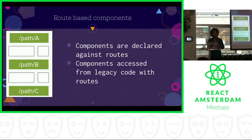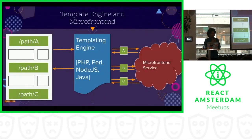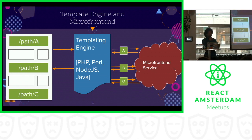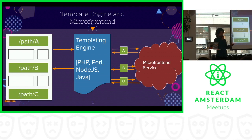Consider a page where the white boxes represent the legacy system and the green boxes are components built using your modern technical stack. You have a templating engine — it can be PHP, Perl, Node.js, Handlebars, Java, whatever. Whenever this templating engine encounters one of these modern components, it makes a request to your micro frontend service. For each of these components, the micro frontend service returns the component back to the templating engine. The templating engine then stitches it together into the whole page and sends it to the user.